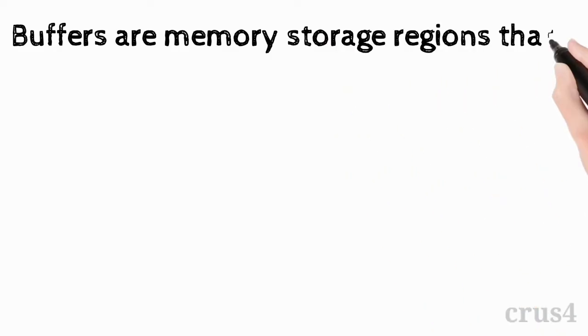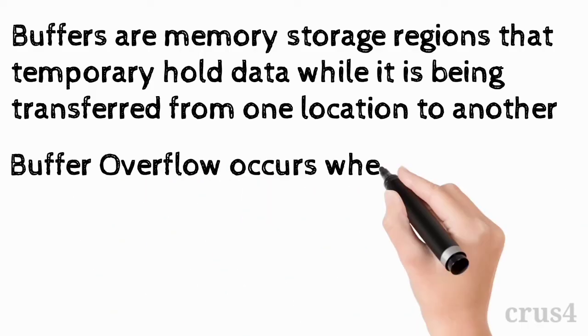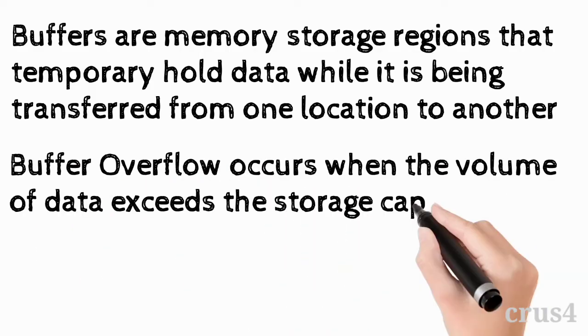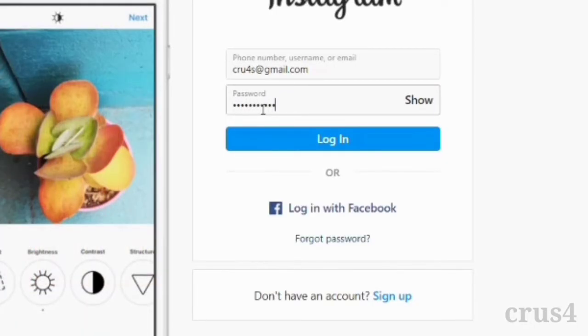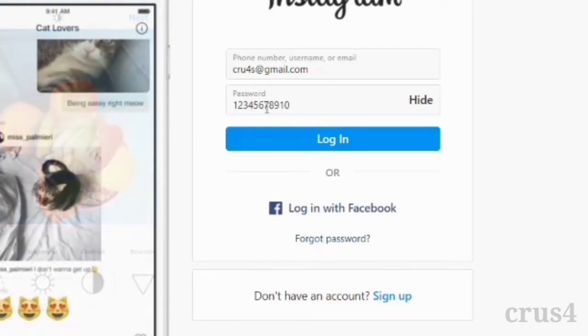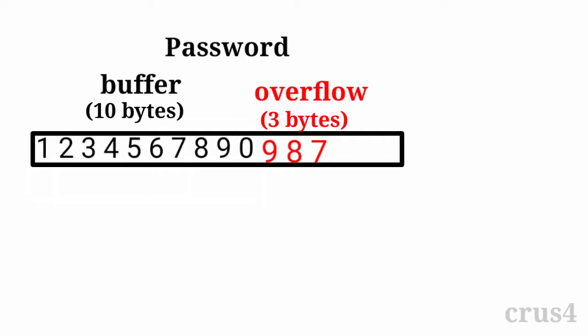Before we discuss about Buffer Overflow Attack, let me briefly tell you what exactly Buffer Overflow is. Buffers are memory storage regions that temporarily hold data while it is being transferred from one location to another. A buffer overflow occurs when the volume of data exceeds the storage capacity of the memory buffer. For example, suppose you are filling a form on a website and there is a password field with a maximum of 10 characters allowed. If you enter a password longer than 10 characters, you give an input more than the buffer can hold, and the program must raise an error.